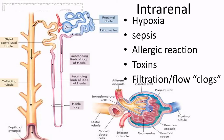Infective agents — bacterial infection, sepsis — can get into the kidney. If bacteria gets in your blood, it goes to the kidney and starts causing damage there. Hypoxia is different from ischemia: if you don't have enough oxygen in the blood, the kidney starts starving and dying. Allergic reactions, toxins, and clogs can also occur — imagine spaghetti strainers filling up and getting clogged so they don't work appropriately.